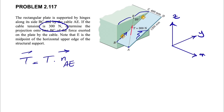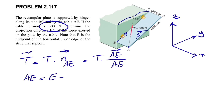One simple way to find the unit vector: T equals the magnitude times n_AE. We find n_AE as the vector AE divided by its magnitude. For finding vector AE, all we need to do is find the coordinates of the endpoint E and subtract the coordinates of the starting point A. We consider our origin at point A, so this will be our y, this will be our x, and we'll have this as our z.